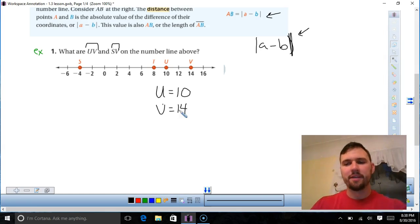The way I roll is, my bigger number is 14. So to find distance, I take my bigger number and I subtract from it my smaller number. So 14 minus 10, that gives me 4. So UV equals 4.